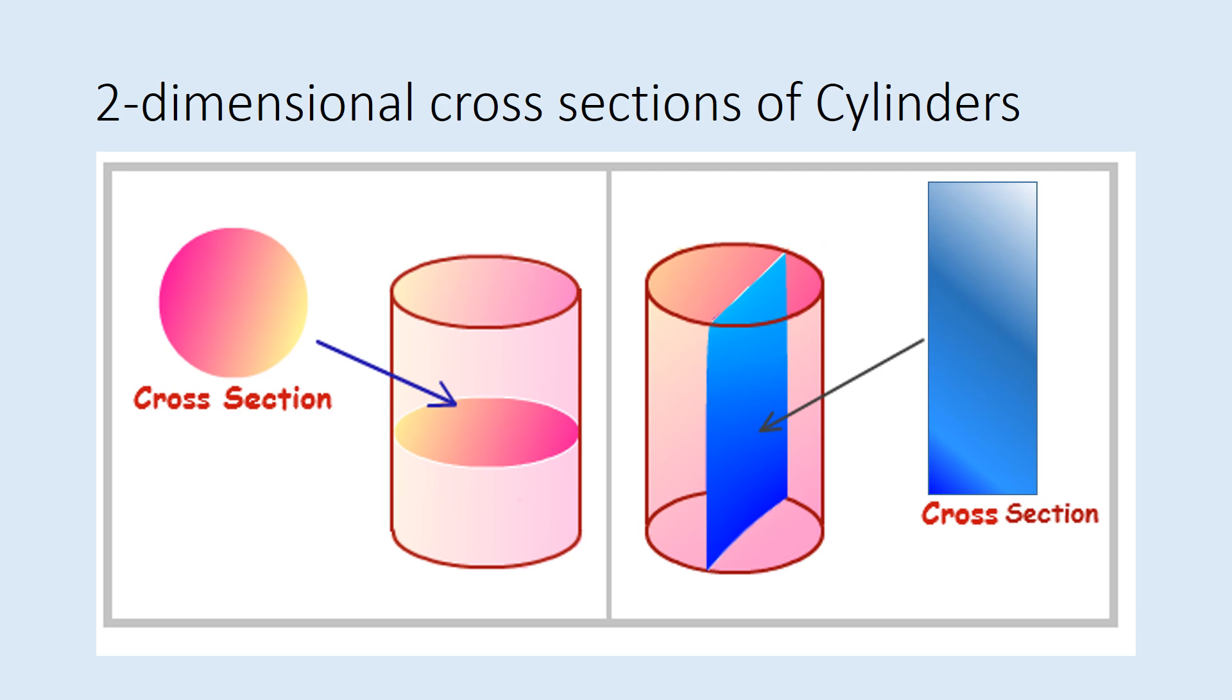Now the vertical cross sections are going to be more difficult. You're going to have to look at the shape like you're holding it straight on. If you look at a can straight on what do you really see? You see a rectangle and when we slice a cylinder vertically we get a rectangle.